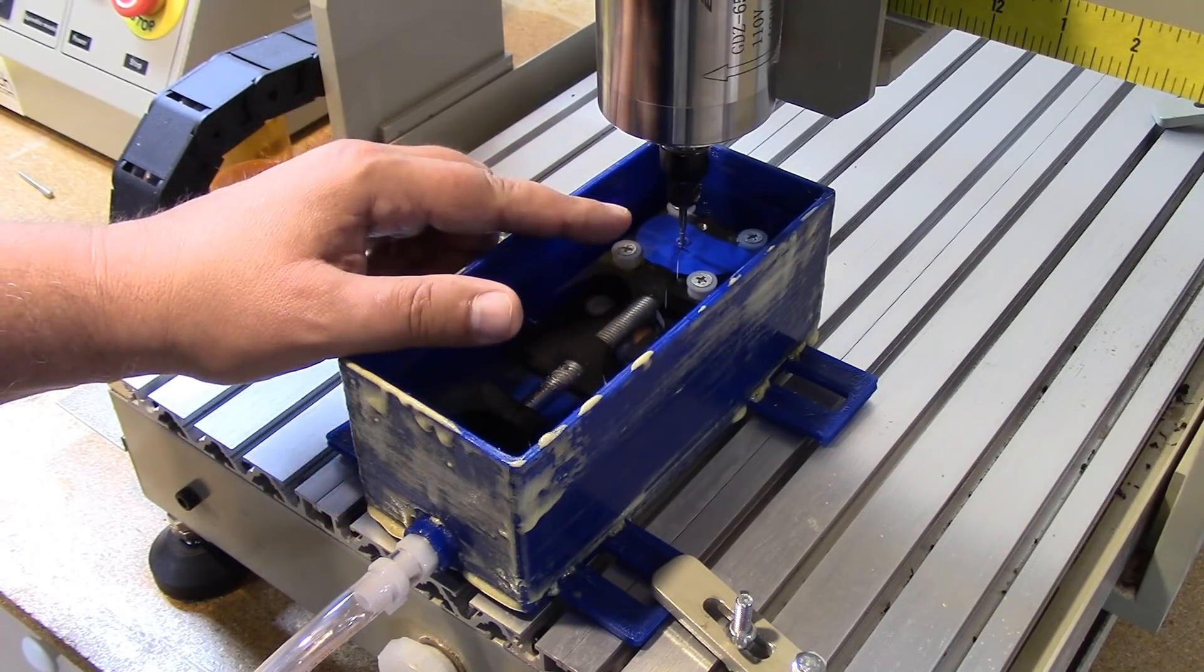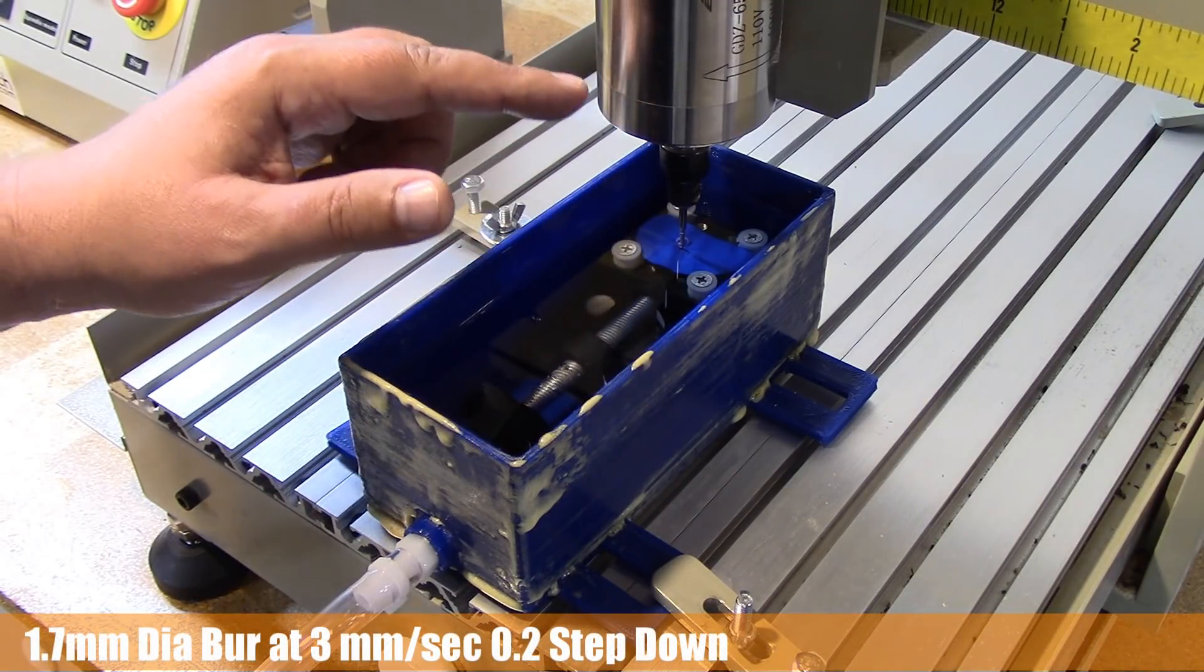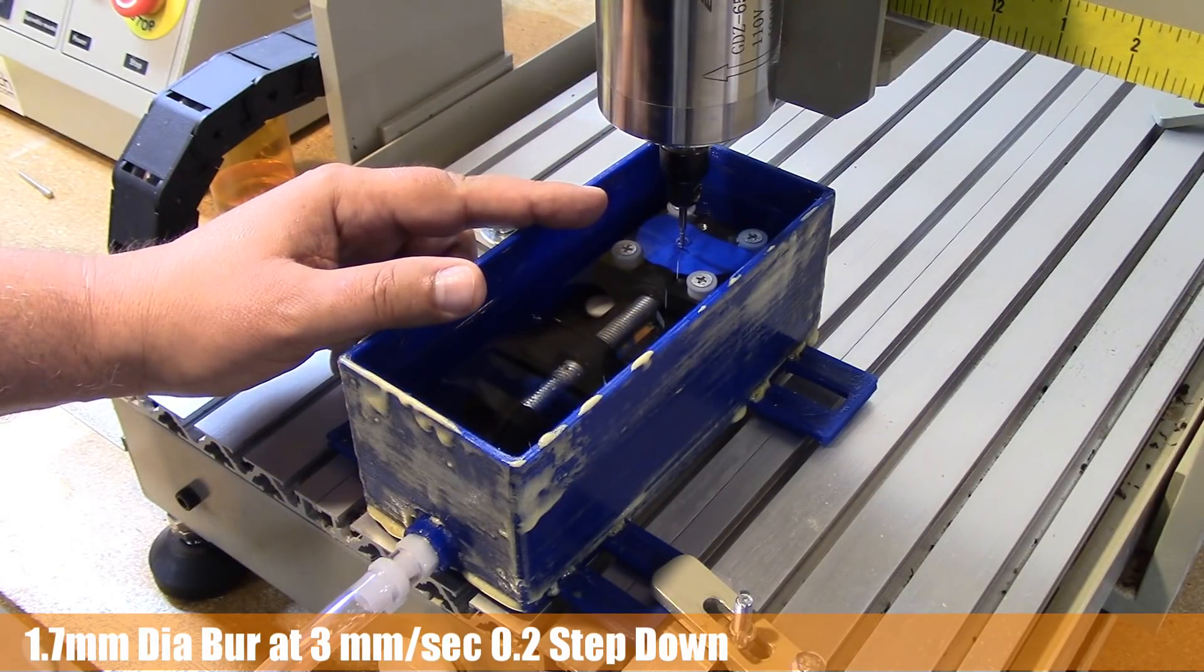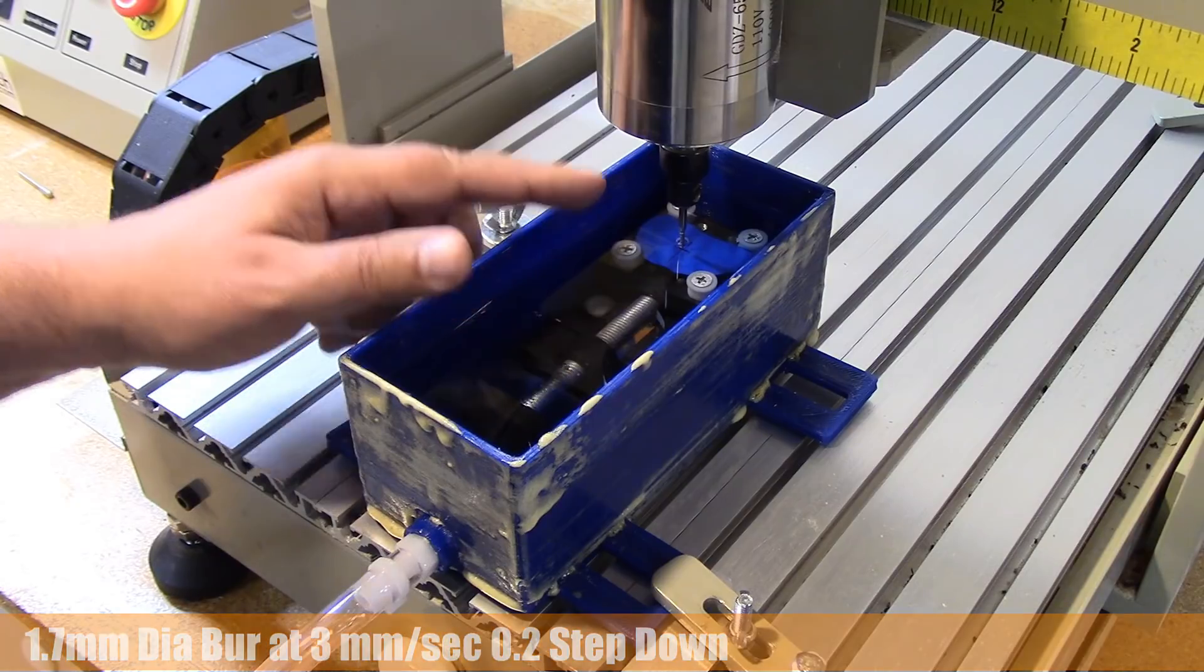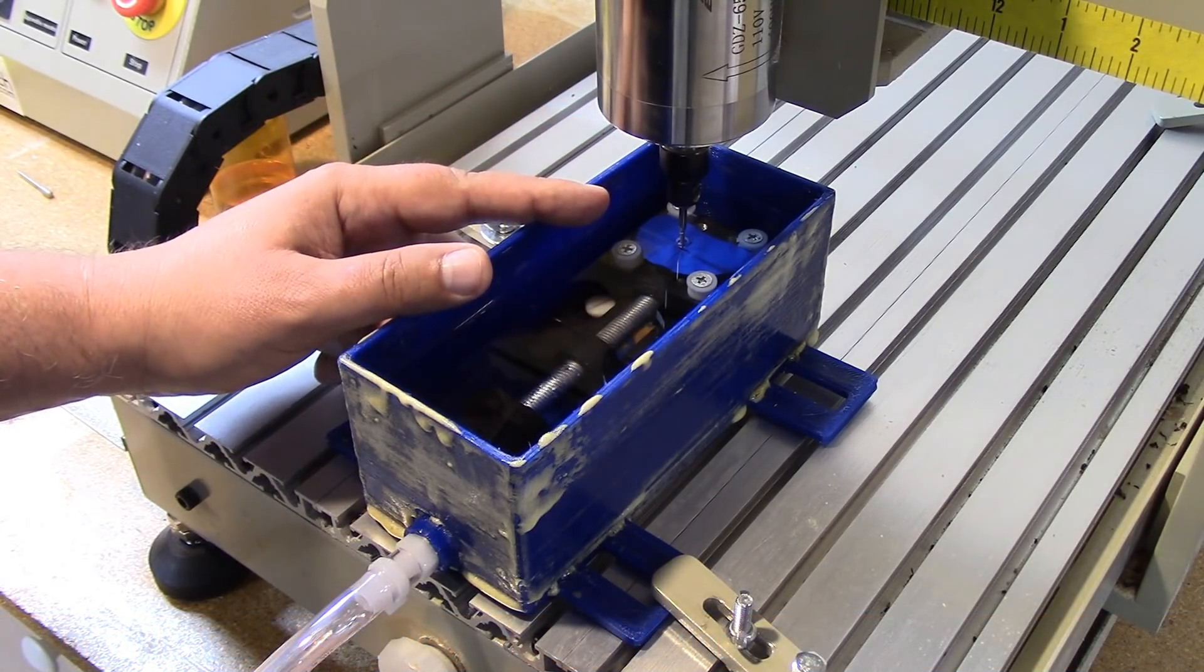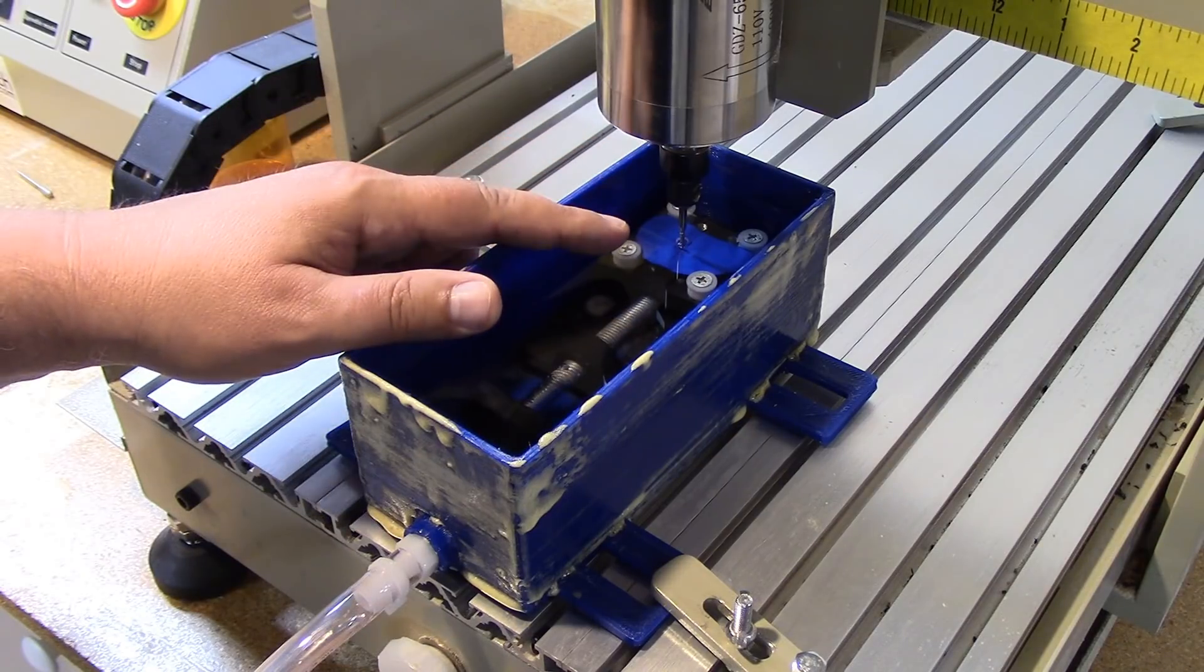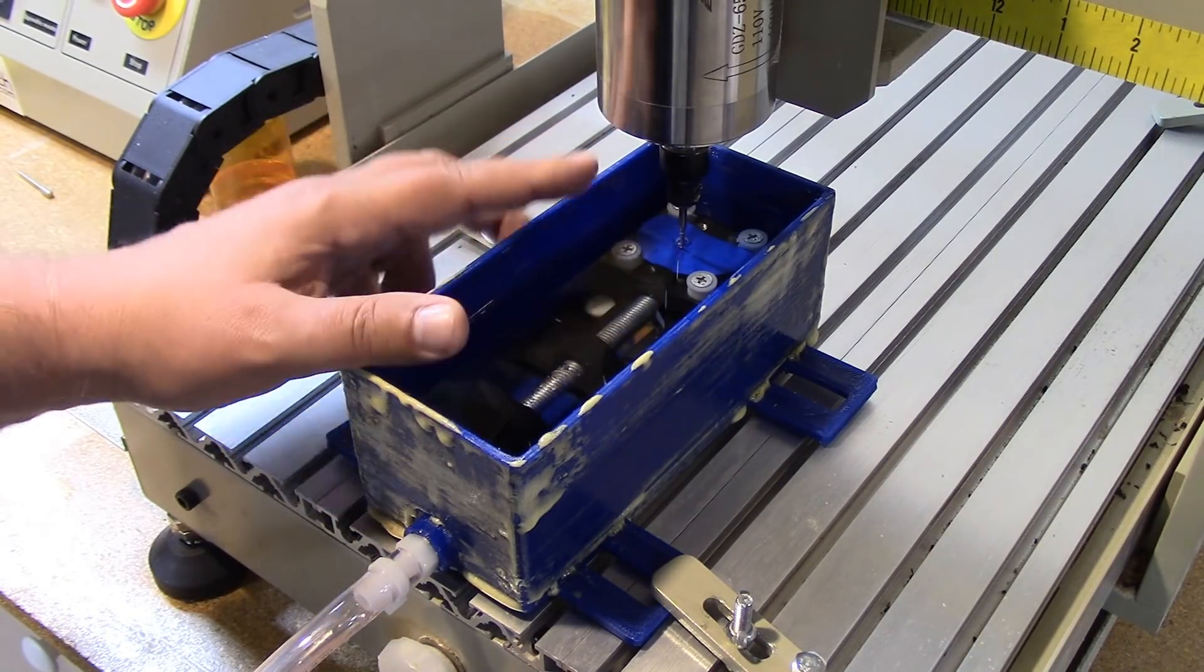I'm going to use a 1.7mm diamond burr end mill. I'm going to cut this at 3mm a second, so a lot slower. The last one I was trying to do at 20mm a second. I'm going to go 0.2 step down. So this is a little short of 2mm, so it's going to take around 10 passes to cut this. It's going to take a little while.